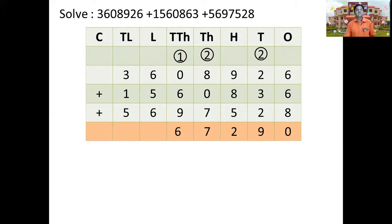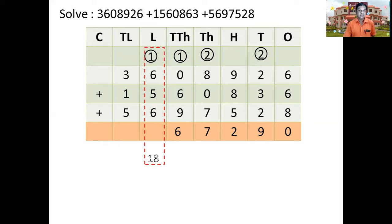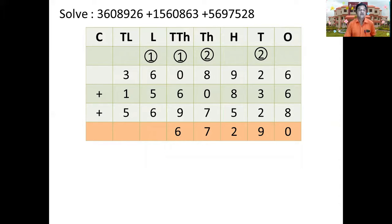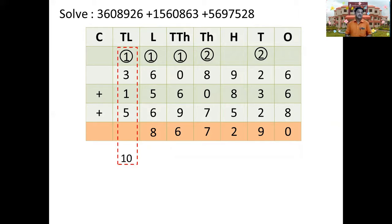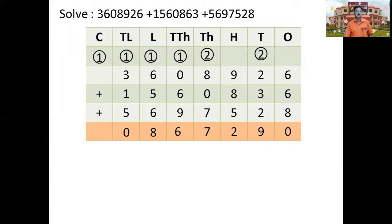Carrying 1 to the next place and putting 6 in the ten-thousands place, we now have 1, 6, 5, and 6 to add, giving 18. We place 8 and carry 1 to the next place. Then we have 1, 3, 1, and 5 to add, giving 10. We write 0 in that place and carry 1 further. As there are no more digits to add with this carried 1, we write it directly in the answer. So the final answer is 1,08,27,290.